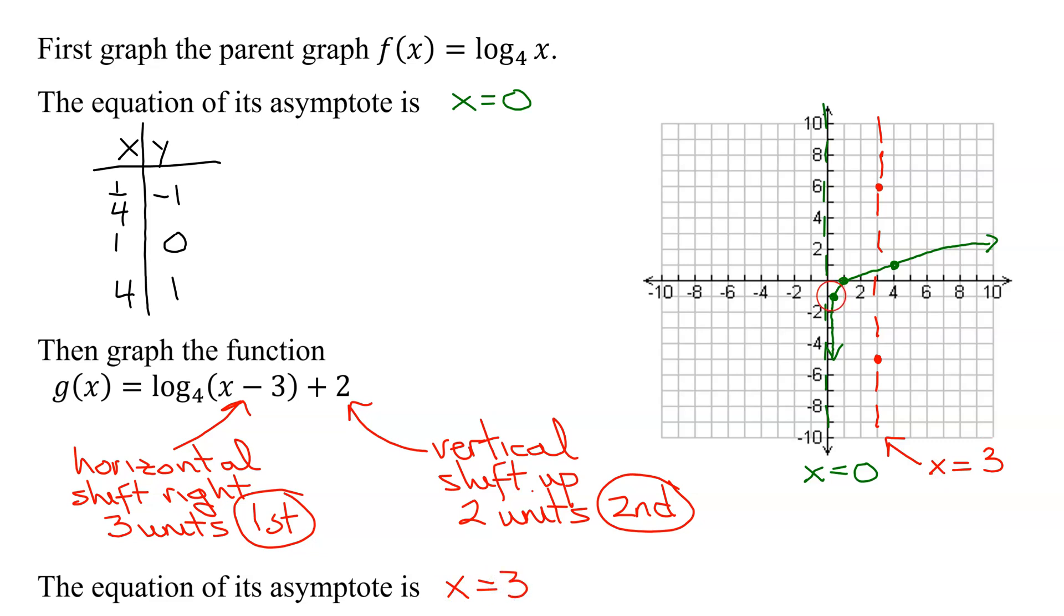Now all we have to do is shift these 3 points. Take this one, you're going to go right 1, 2, 3, and up 2. It's about that. The next 2 are easier, so 1, 2, 3, up 2. And the last point, 1, 2, 3, up 2. So my final graph is going to hopefully not cross my vertical asymptote, and it will look something like that. Excuse the bad drawing. So my final graph is going to look like this with a vertical asymptote of x = 3.